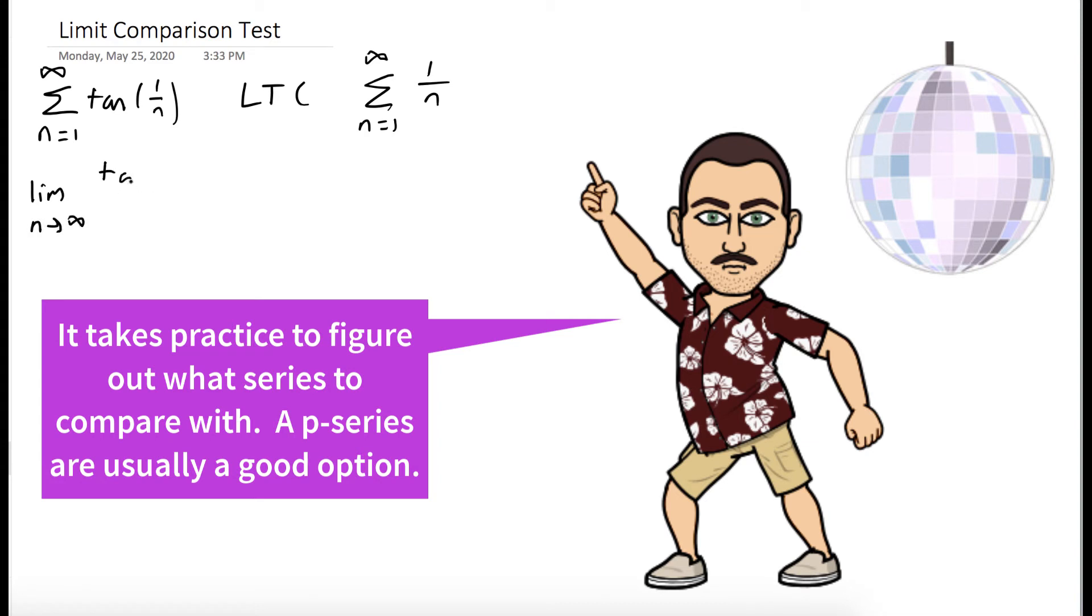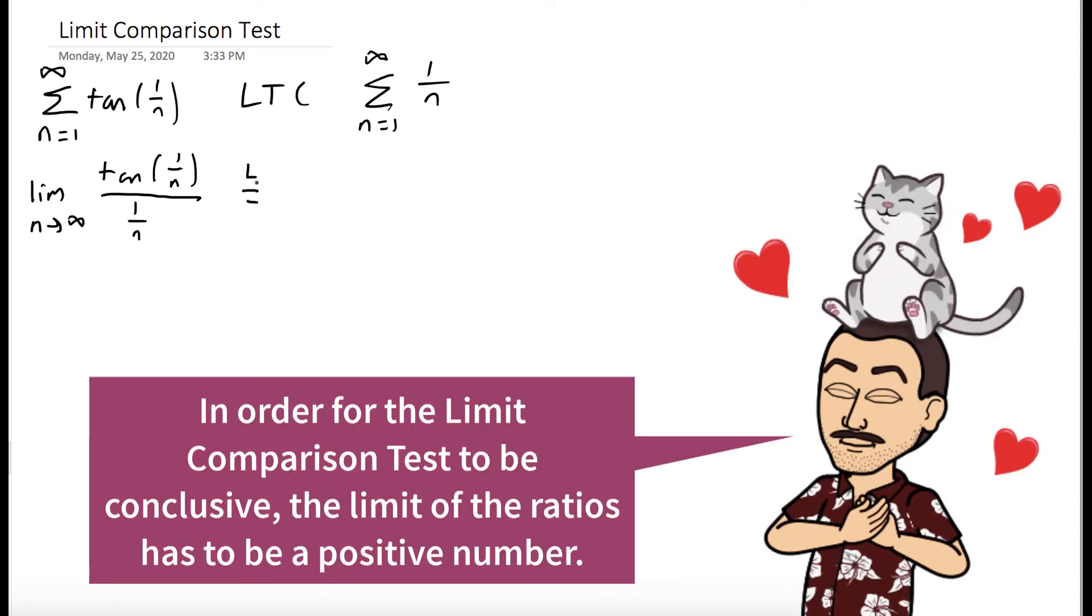So we'll take the limit as n goes to infinity of tangent of 1 over n over 1 over n. And the way we evaluate this limit is with L'Hopital's rule, which means we'll take the limit as n goes to infinity of the derivative of the numerator, which is secant squared 1 over n times the derivative of the inside, which is negative 1 over n squared.